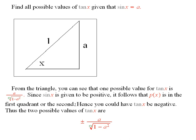And so you could have the point determined by x being in the second quadrant. But in the second quadrant, the tangent is negative. And so the two possible values for the tangent of x are plus or minus a over the square root of 1 minus a squared.